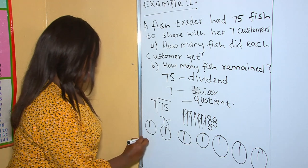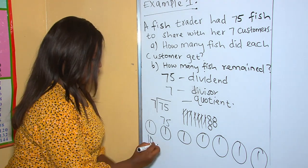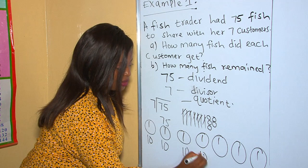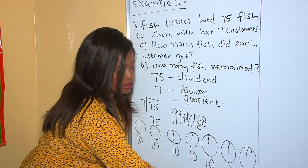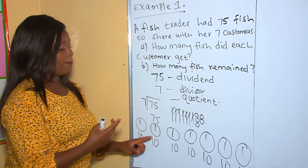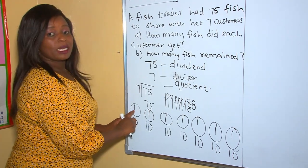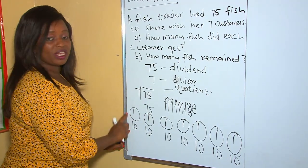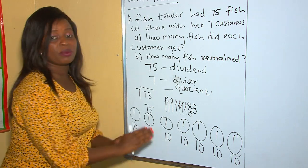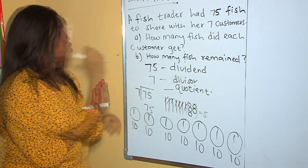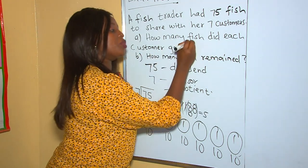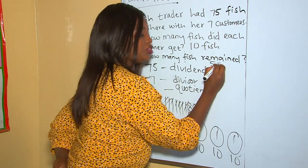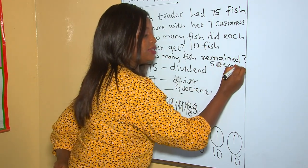That one ten represents ten. Each customer went home with one ten, which is ten fish. So each customer went home with ten fish, and five fish remained.